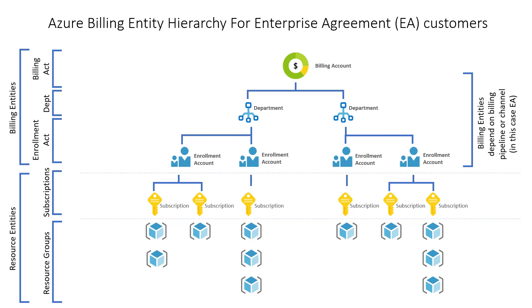Over time, each of these channels will be unified into the Microsoft Customer Agreement or MCA channel, which supports all these purchasing scenarios. In this video, we will look at the billing entities for Enterprise Agreements and Microsoft Customer Agreements. The Enterprise Agreement or EA billing entities determine your invoice structure and your top-level groupings for costs. For EA customers, there is one billing account per EA and one invoice per billing account.